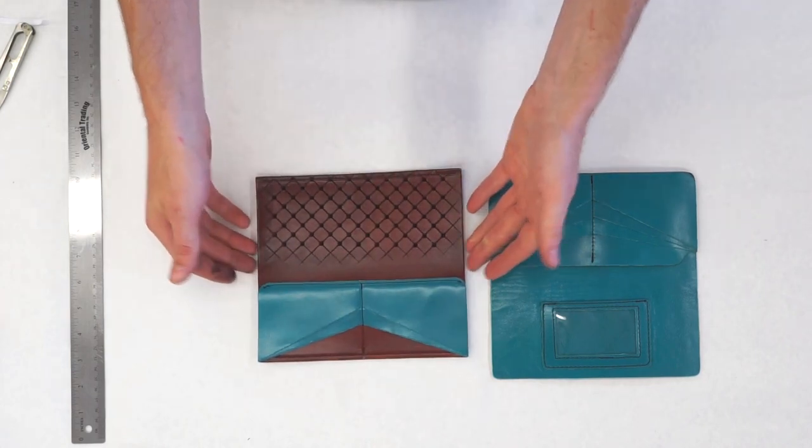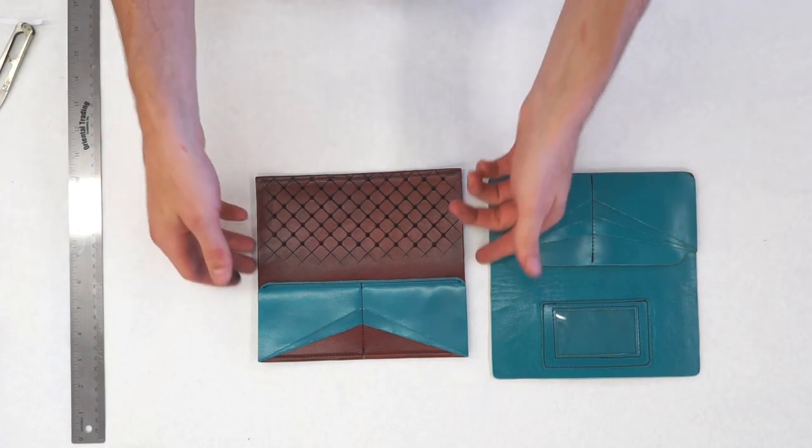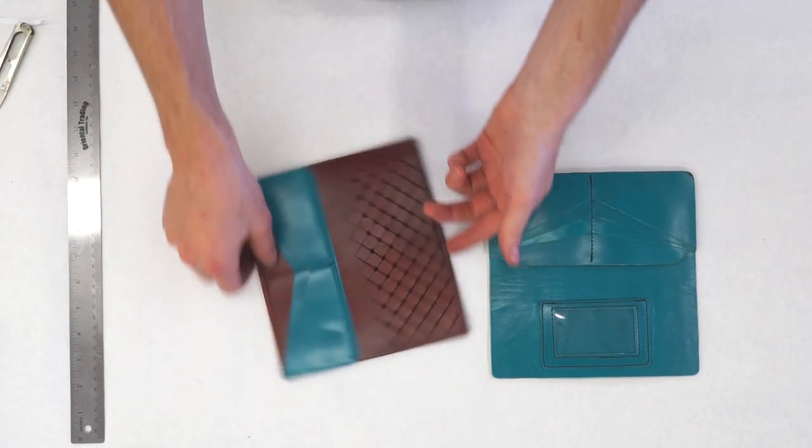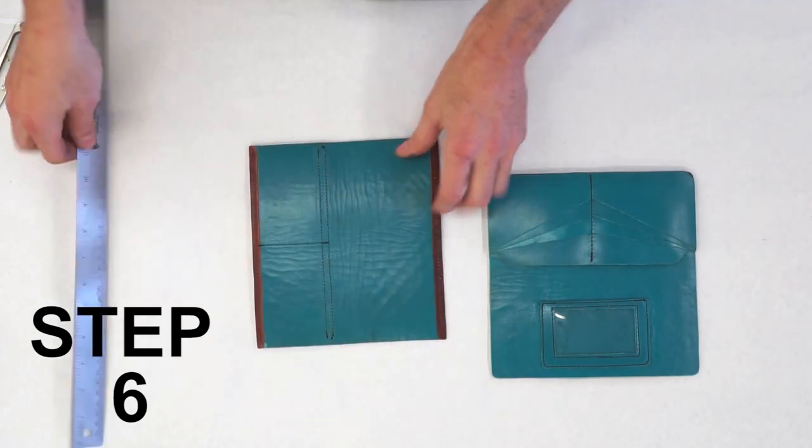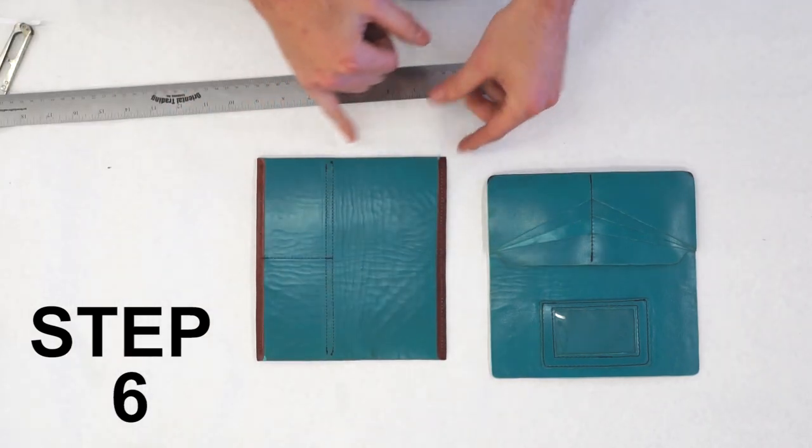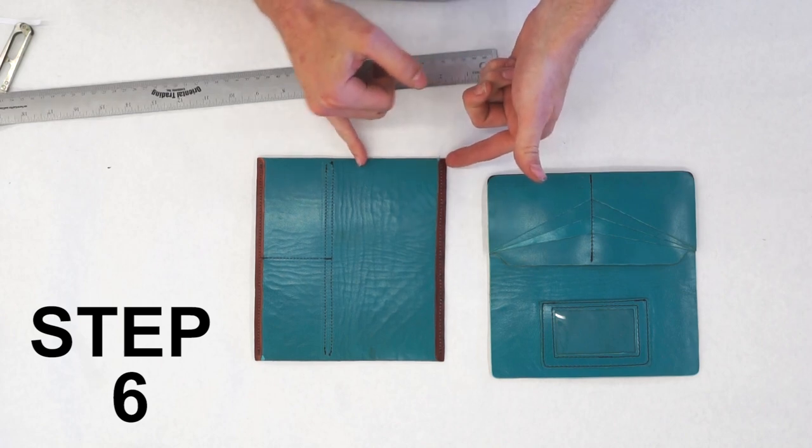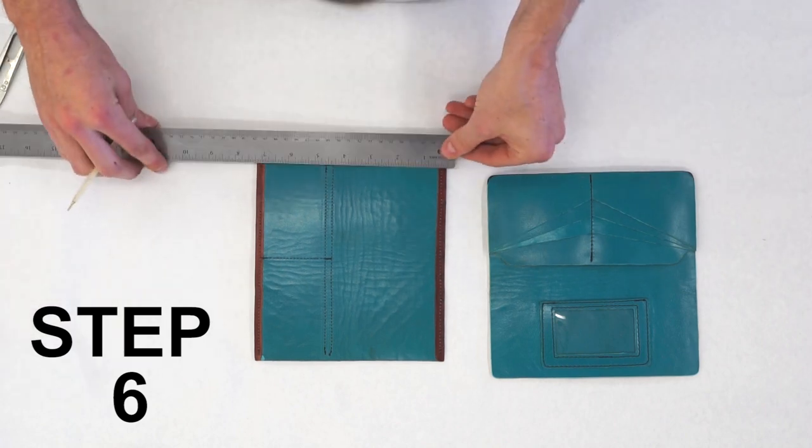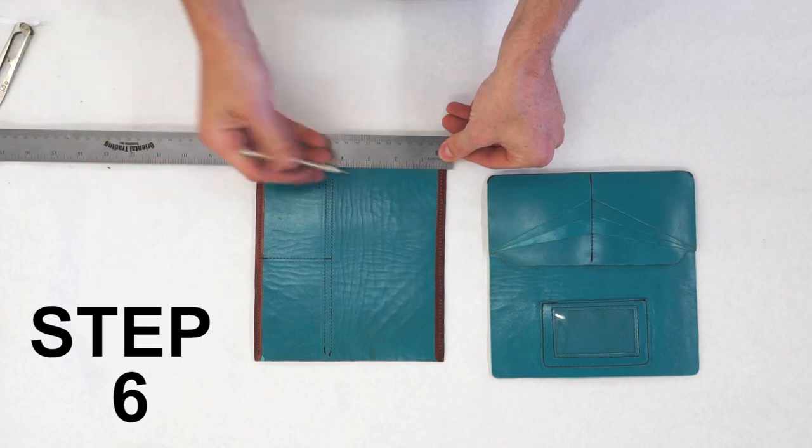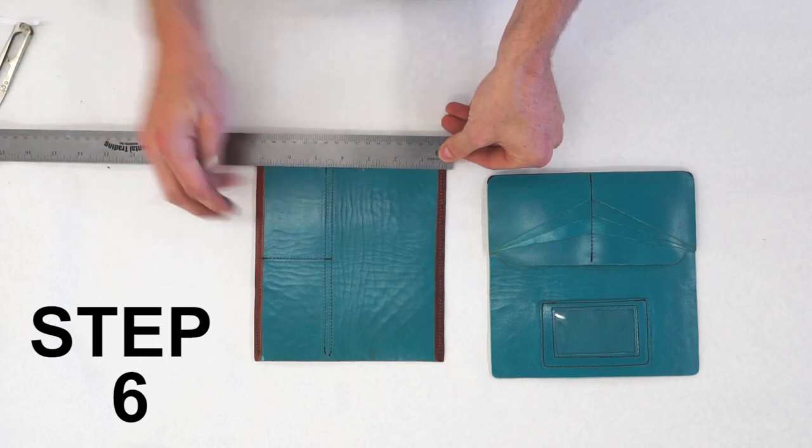Alright, once we have our stitch down the center of the two pockets, we're ready to flip it over and attach the two clutch backs. So what we'll do, we'll flip it over and I'm going to measure three and one eighths inch from this top edge of the rolled edge down to the middle of the clutch back. It's not going to end up right in the middle, but we're pretty close.